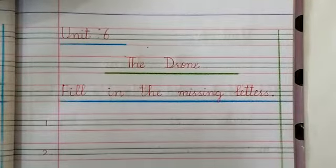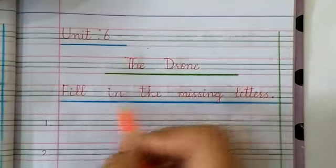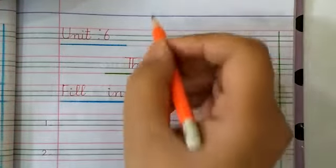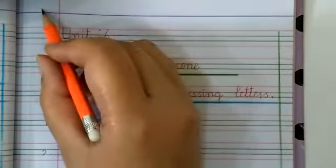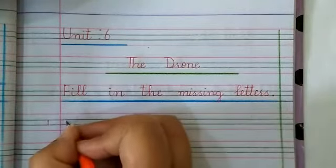Assalamualaikum, one class. Today we are going to do English, Unit 6, The Drone. Fill in the missing letters from second term. First of all, mention CW, date, and day. Now we start from here. Our number one word is...